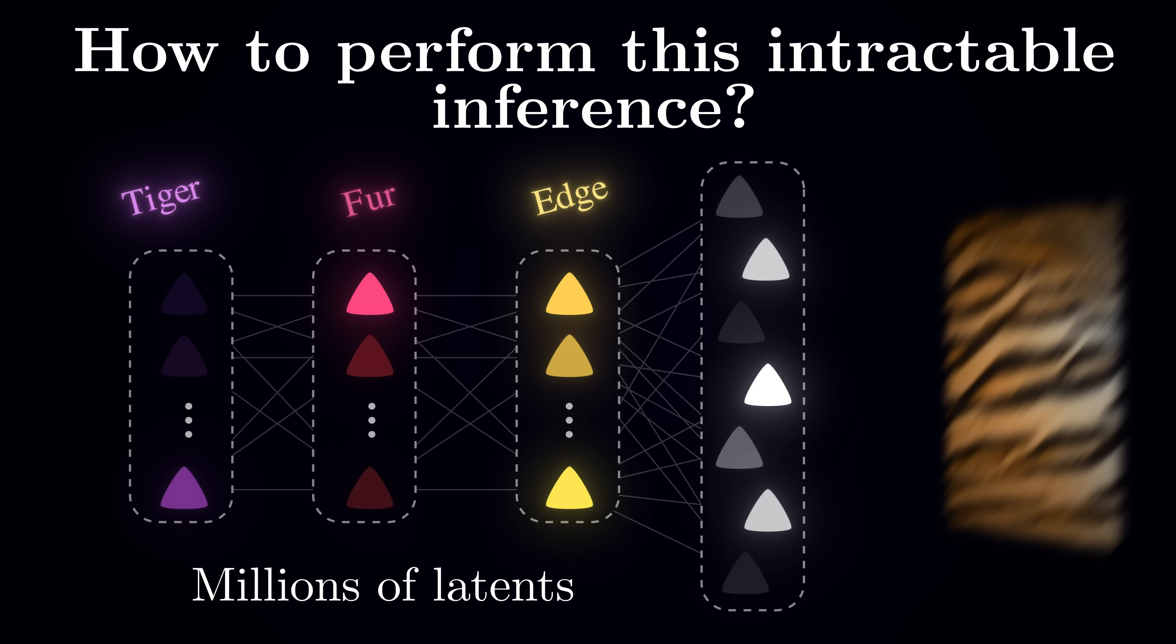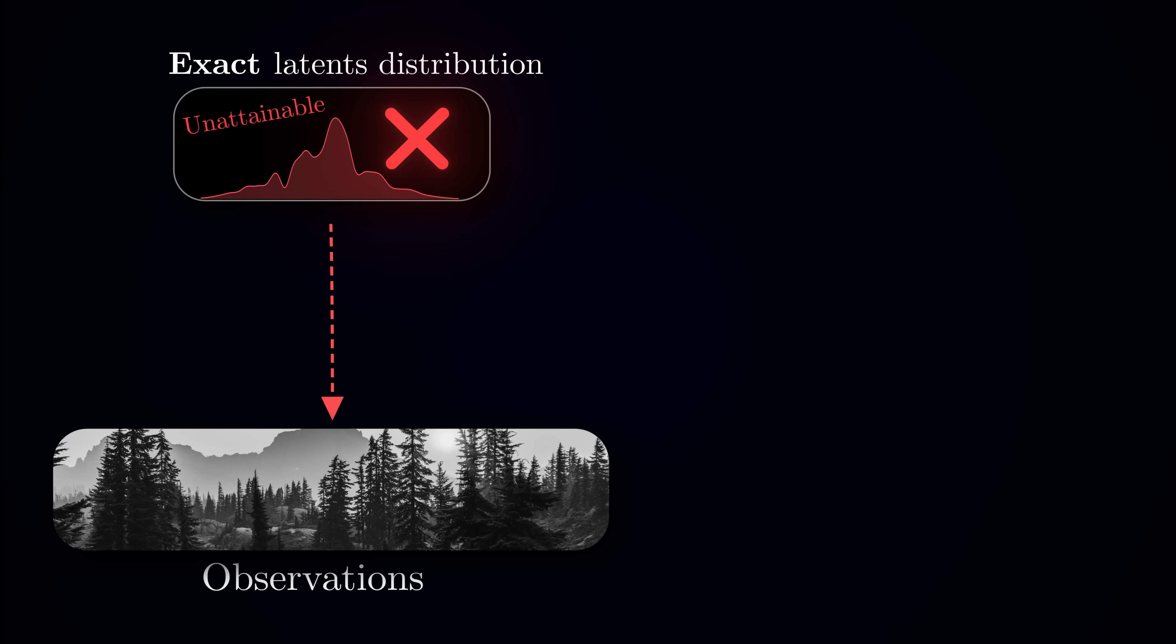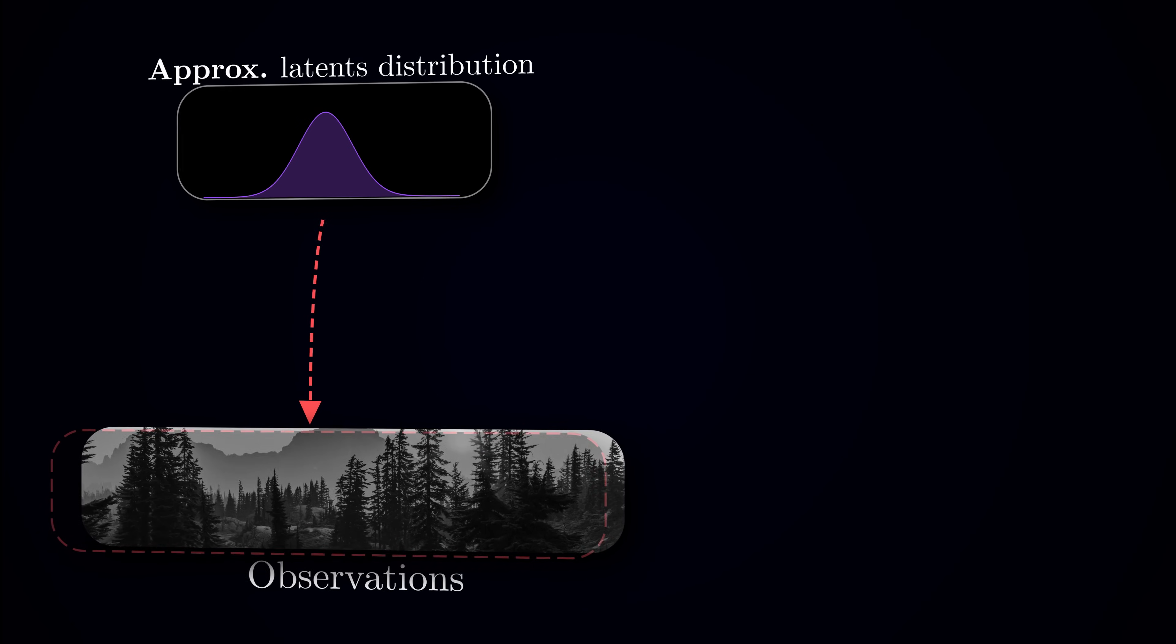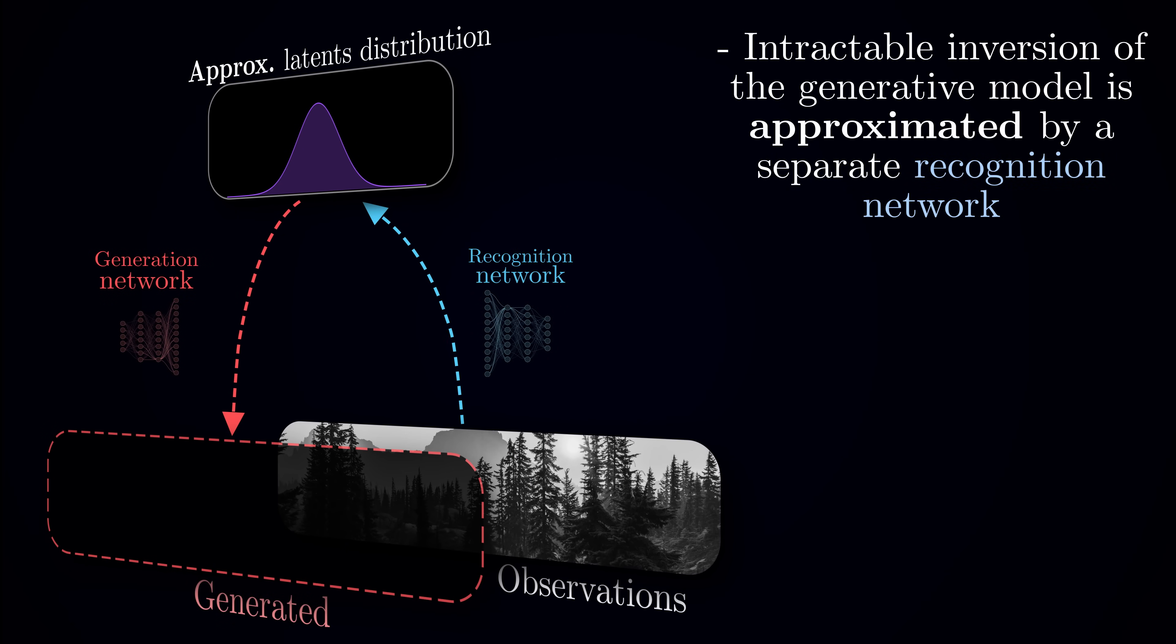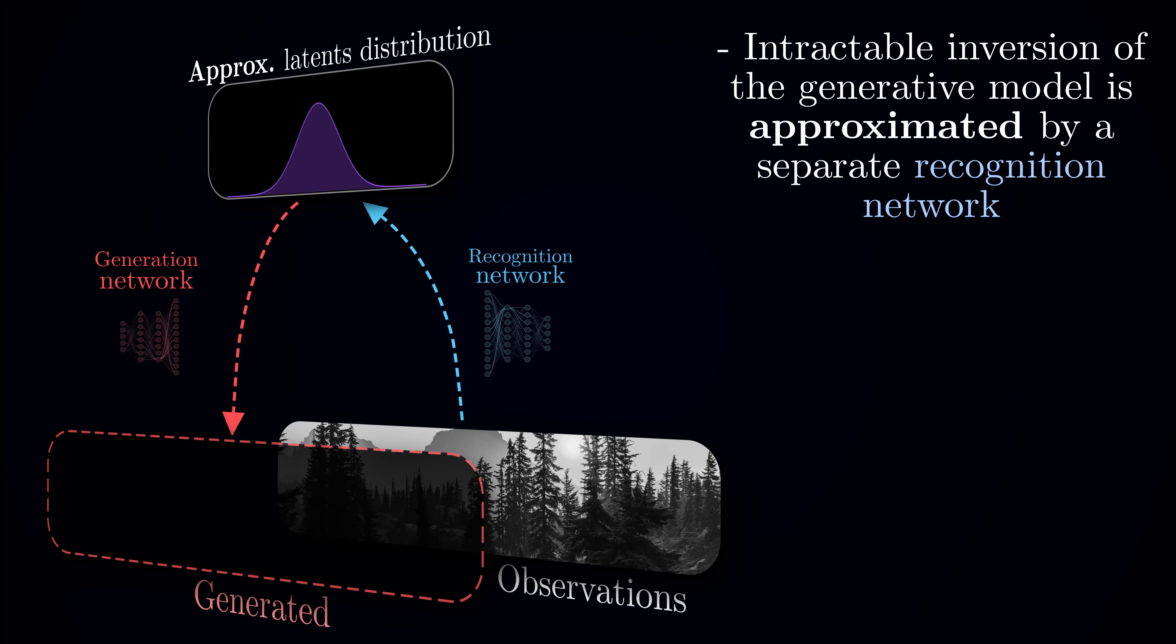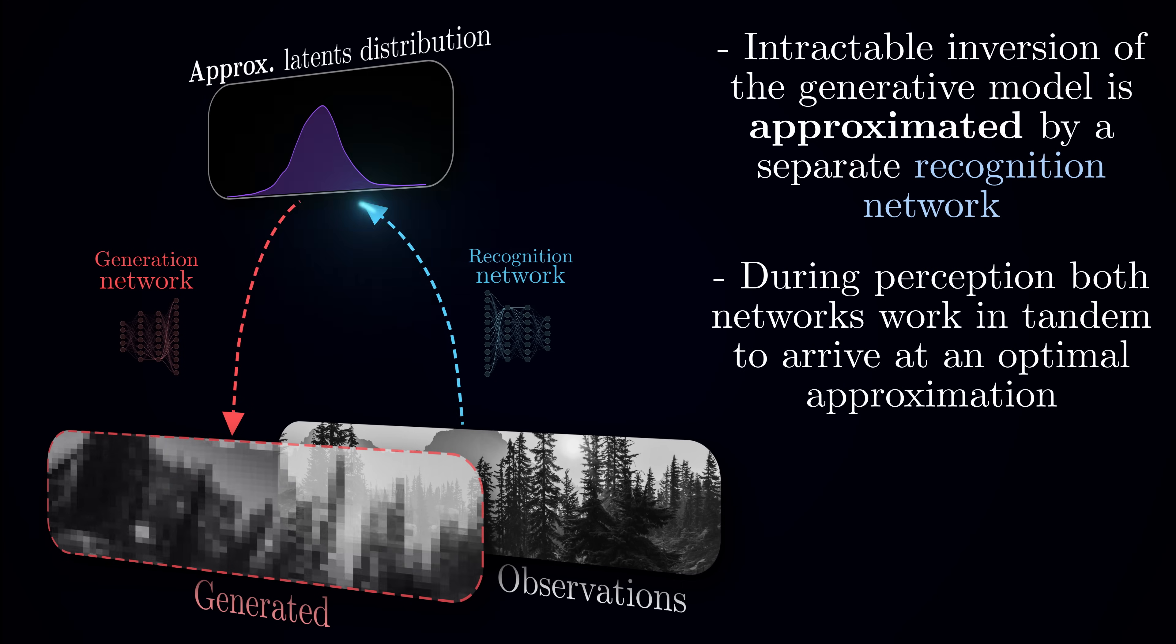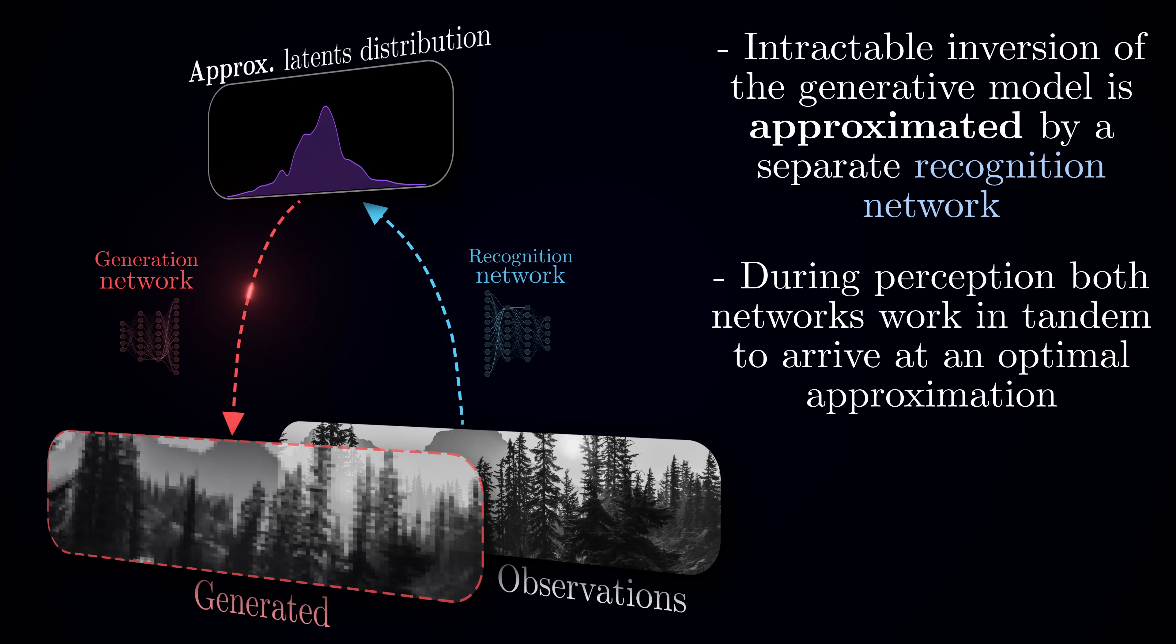So how does the brain manage this seemingly impossible task? The key idea is that while we can't directly invert the generative model and compute exact probabilities of how different causes are likely given the sensory observation, we can try to find an approximation. The brain has a separate network, a recognition model, which works in the opposite direction by mapping a sensory observation to the distribution of causes. Importantly, this result is only an approximation, a rough first guess of what causes might explain the sensory observation. To improve the guess, the brain might need to do multiple rounds of engaging recognition and generation networks in a loop to arrive at a refined estimate.